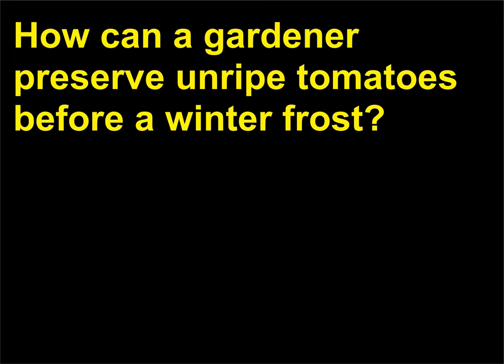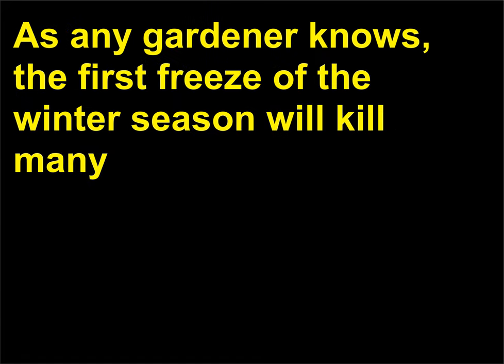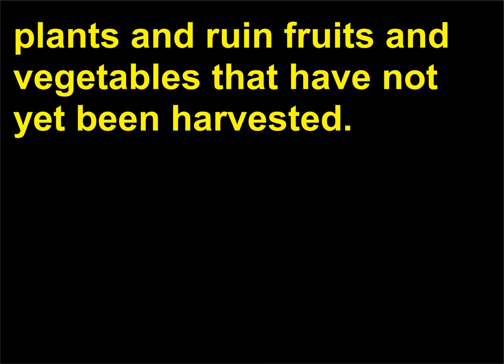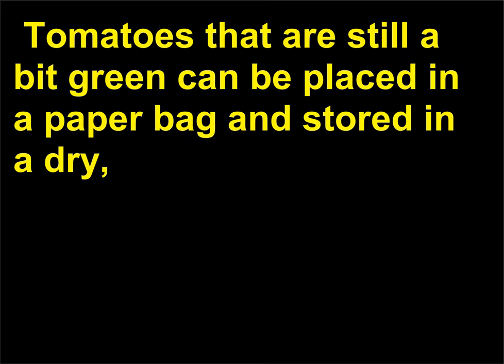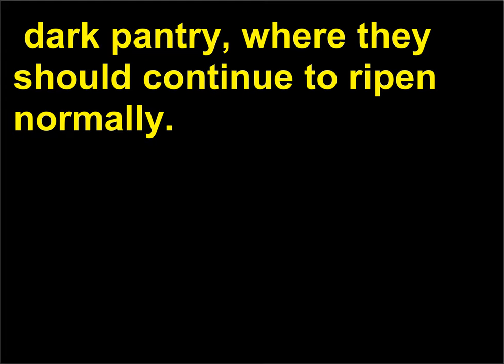How can a gardener preserve unripe tomatoes before a winter frost? As any gardener knows, the first freeze of the winter season will kill many plants and ruin fruits and vegetables that have not yet been harvested. Tomatoes that are still a bit green can be placed in a paper bag and stored in a dry, dark pantry, where they should continue to ripen normally.